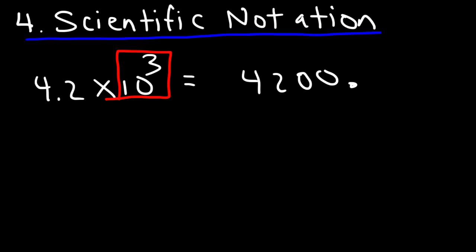If you see a negative exponent, it would indicate a small number. For instance, 3.5 times 10 to the minus 4. To convert it from scientific notation to standard notation, you need to move the decimal point four units to the left. So you'll get 0.00035.